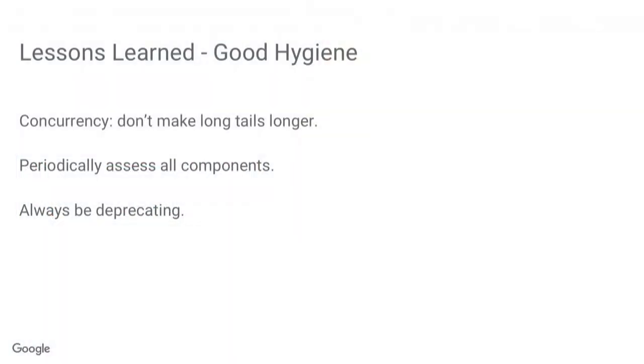Third hygiene lesson: always be deprecating. Old APIs get in the way of scaling. Monarch moved from a pull model — where leaves connect to targets and data streams back along a persistent connection — to a push model, because the pull model is stateful and costs memory to keep connections and track targets. Moving to push saved the equivalent of a dozen engineers' worth of RAM by eliminating that state, an insane amount. It took a couple of years because it touched every binary at Google, but it was worth it — they also got rid of an outage-prone component in the process.